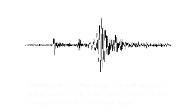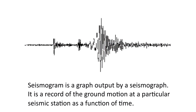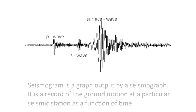This graph is called a seismogram. It is a graph output by a seismograph. The first to arrive at a seismic station is the P wave, followed by the S wave, then the surface wave. Take note that the P wave travels faster than the S wave.